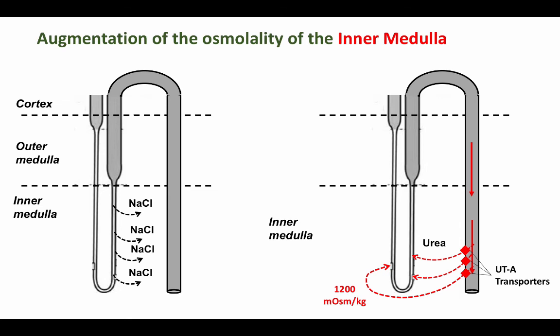When the kidney is producing a maximally concentrated urine, it is doubtful that the TAL-driven mechanism alone can produce a medullary interstitium as high as 1200 milliosmoles per kilogram — possibly only as high as 600 to 700 milliosmoles.